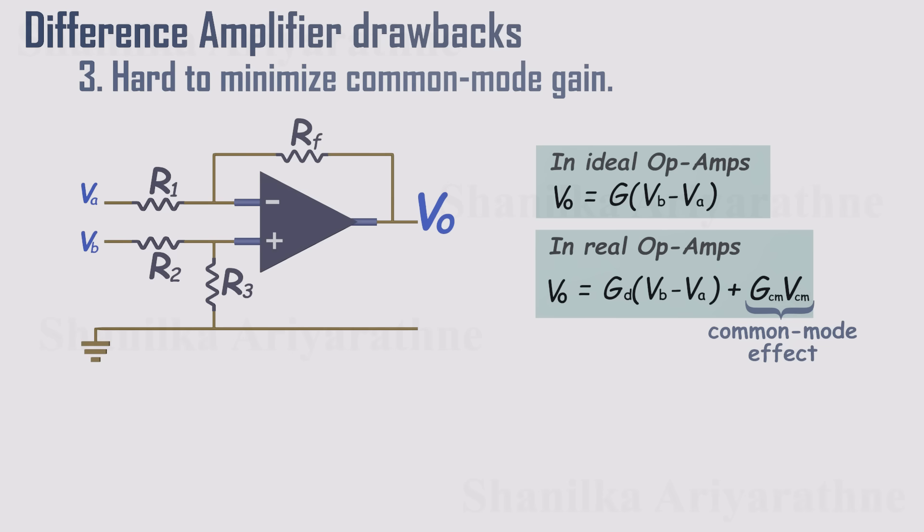On paper, the math shows that the common mode gain follows this equation. If the resistor ratios are perfectly matched, Rf over R1 equals R3 over R2, then the common mode gain becomes zero.